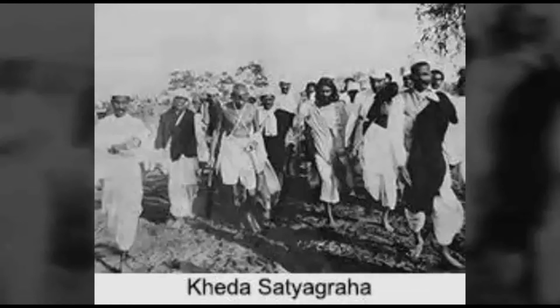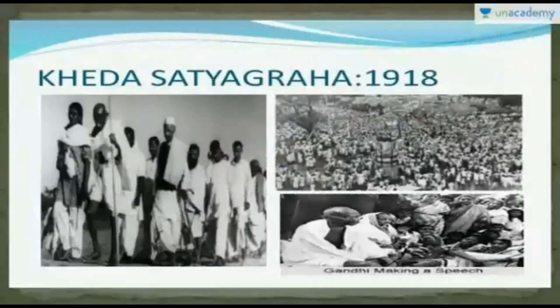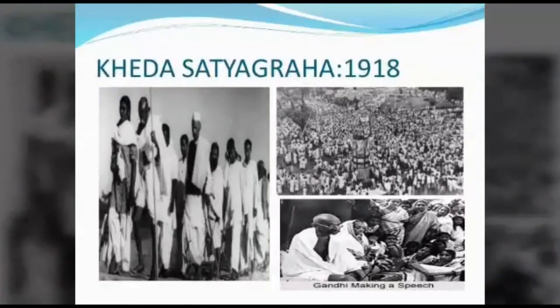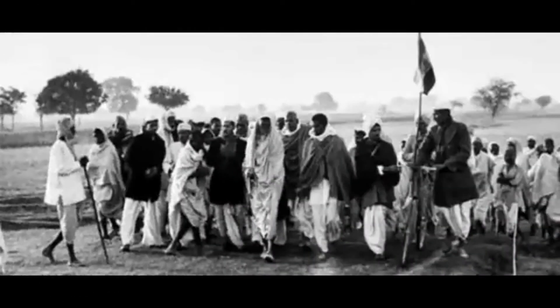Khera Satyagraha: Due to constant famines in Khera district, Gujarat, the crop had failed. Still, land tax was being collected by the government. Gandhiji suggested that the farmers should refuse to pay the tax. The farmers began the movement for scrapping of tax at Khera in 1918. Gandhiji accepted the leadership of this movement. Within a short period of time, the government suspended the tax.